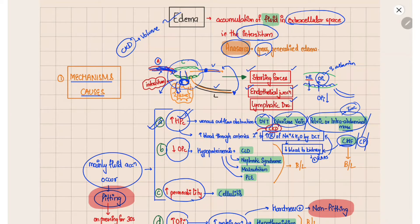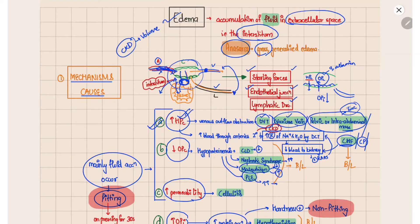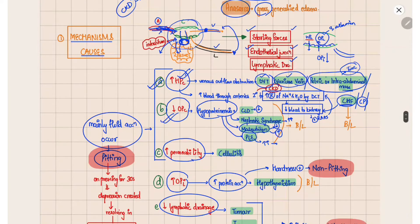If the oncotic pressure of the capillary decreases, there will be decreased pull of fluid back into the capillary, leading to increased interstitial accumulation. This occurs whenever there is decreased albumin in the blood — in CLD due to decreased production, in nephrotic syndrome due to increased excretion, in malnutrition due to decreased intake and increased catabolism, and in protein-losing enteropathy due to loss of protein through stools.